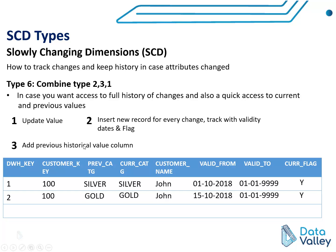We still need to update some values in the previous record. We will update the current category from Silver to Gold — so the first record now has current category Gold and previous category Silver. We will update valid to in the previous record to be the valid from date of the new record minus 1, meaning that record was valid from 1st of October to 14th of October 2018. We also update the current flag: the previous record loses its flag, and the new record gets the Y flag as the most recent record.